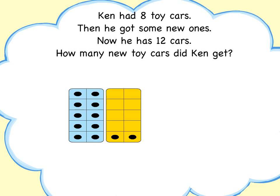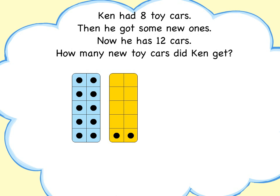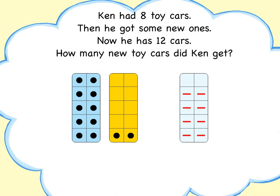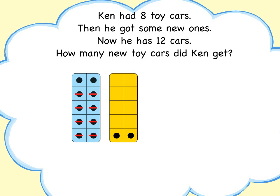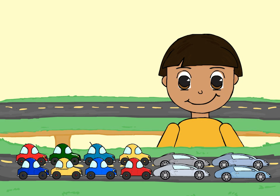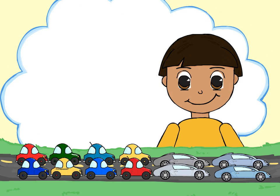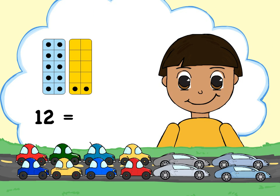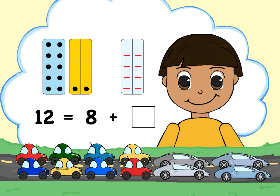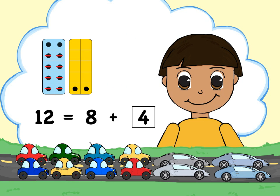Let's model the total with dot tiles. We also know that eight of the 12 cars are old. Let's model that part with a dash tile. Now slide the dash tile over the total to see how many cars are new. There are four dots left, so Ken got four new cars. When children use 10-frame tiles, they can see the whole, and at the same time they can see the known part within the whole, then they naturally model subtraction to find the missing addend.